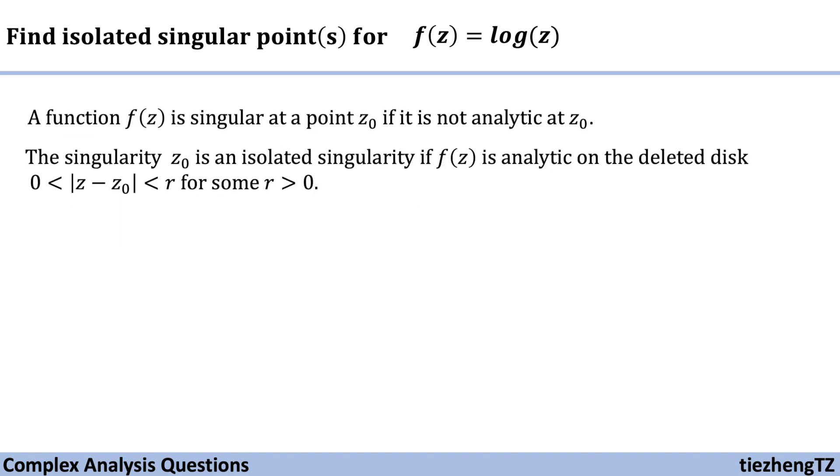We have already introduced the background about isolated singularity. When we say a function is singular at a point, it means that function cannot be analytic at that point. The singularity z₀ is an isolated singularity if the function is analytic on the deleted disk, 0 < |z - z₀| < r for some positive r value.